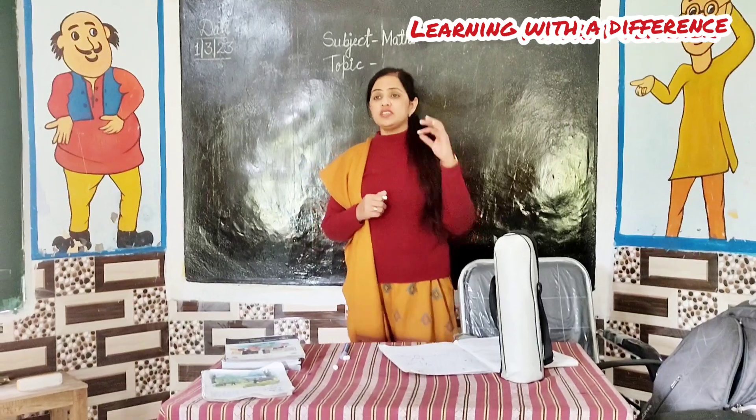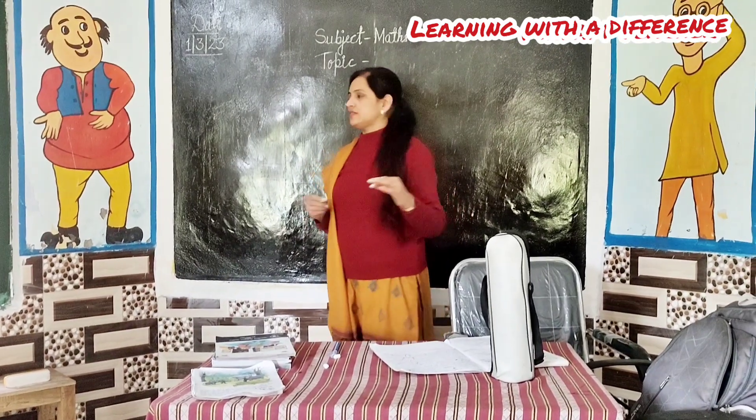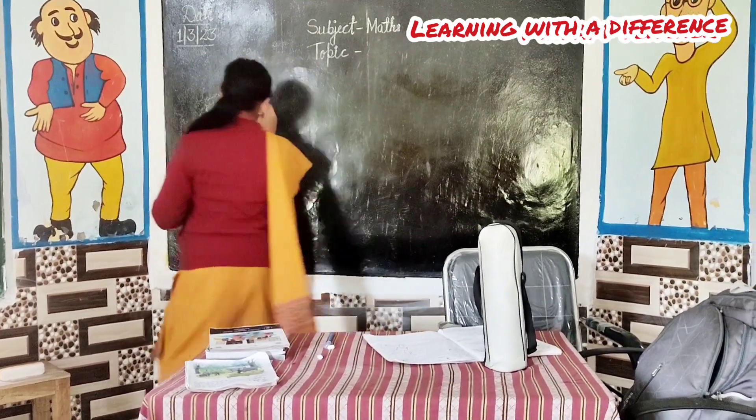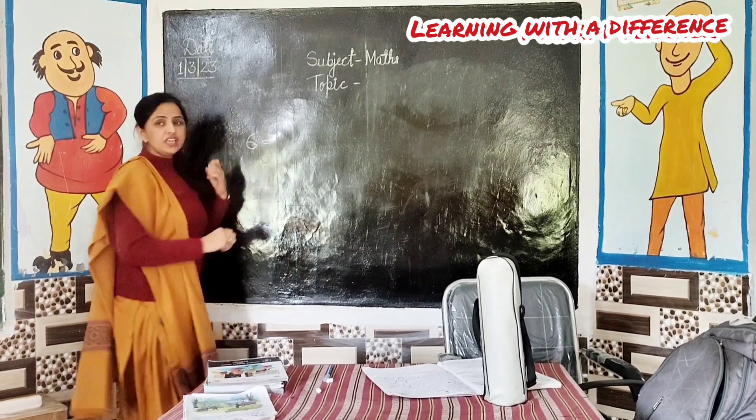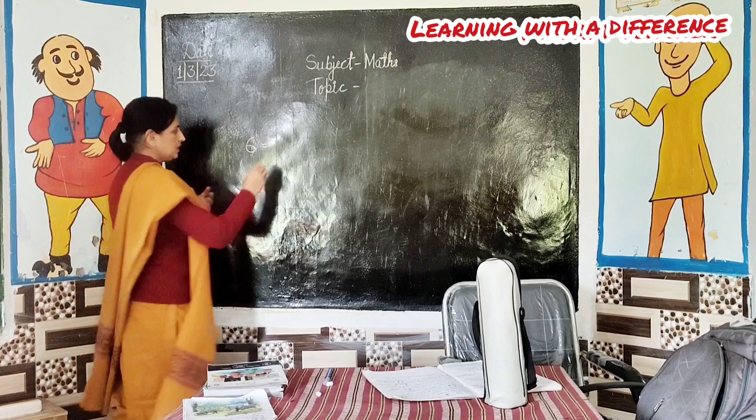Okay, you stand up. Table of 6. Speak table of 6. Okay. Very good. Speak loudly. Okay.